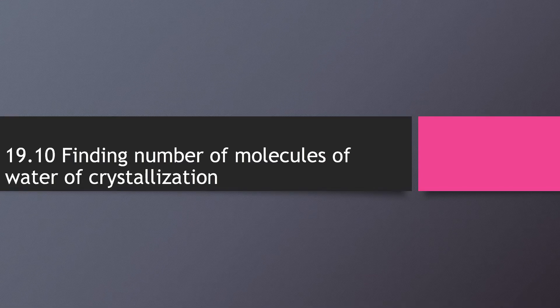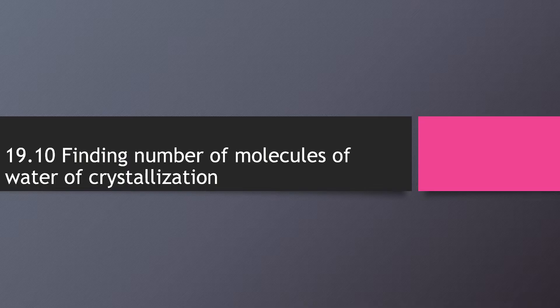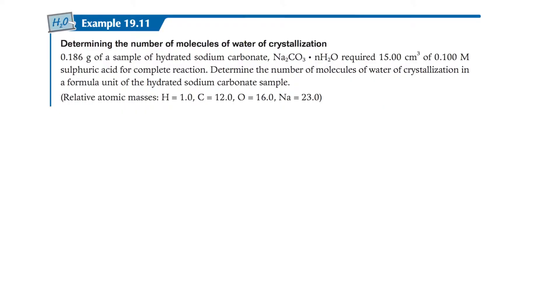In this video we're going to talk about how to find a number of molecules of water of crystallization. For this kind of questions, the salts that we have will be hydrated. That means they will contain water. So basically sodium carbonate, if it contains water, we have a dot in the middle to indicate we have some water of crystallizations inside this sodium carbonate ionic compound.